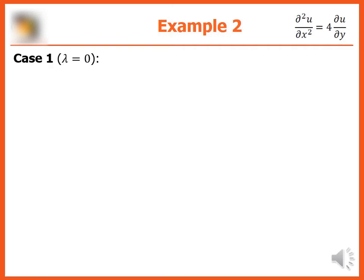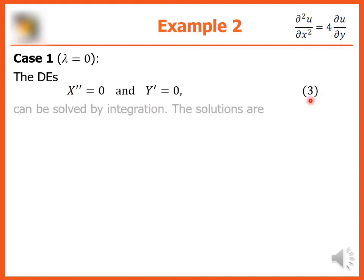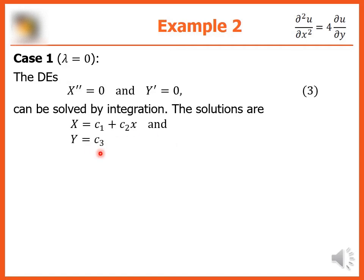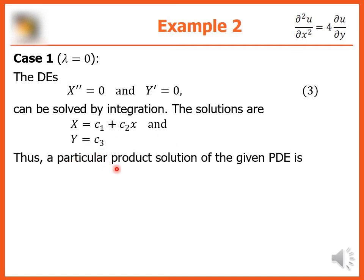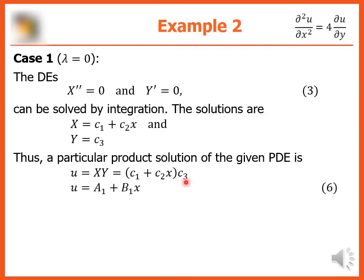For case 1, lambda equals zero: the ODEs are solved by integration, giving X = c₁ + c₂x and Y = c₃. Thus a particular product solution is u = XY = (c₁ + c₂x)·c₃, or u = a₁ + b₁x, where a₁ = c₁c₃ and b₁ = c₂c₃.